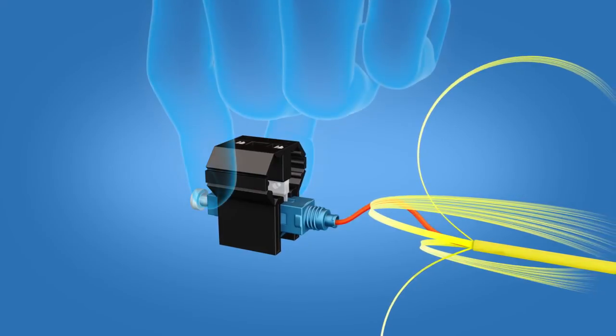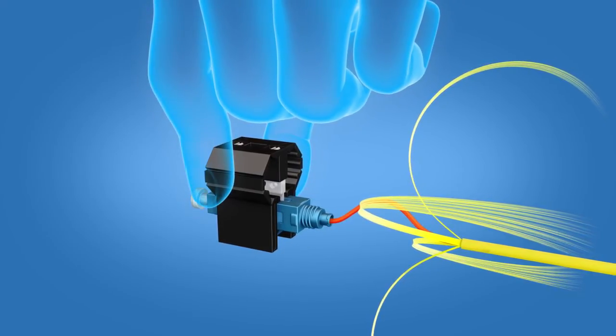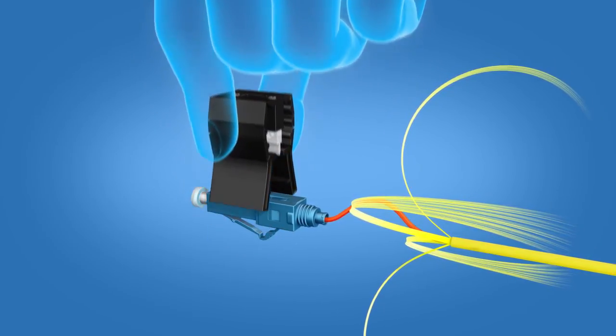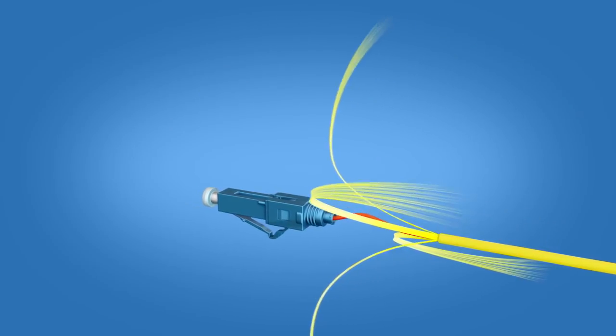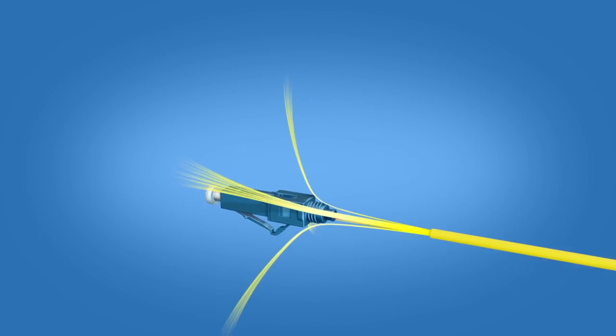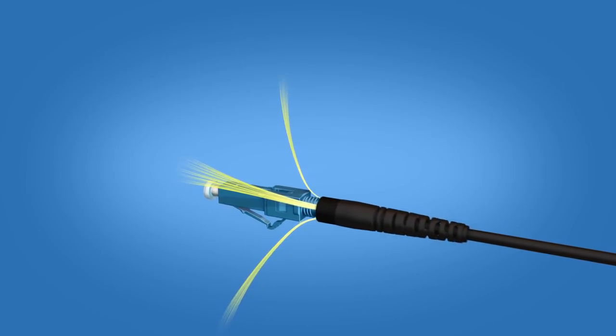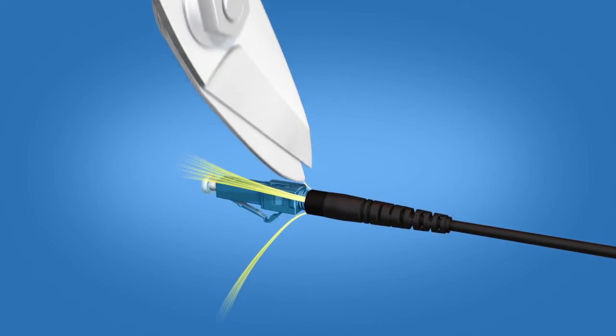Release the wedge clip by squeezing both sides and remove the wedge clip. Divide the Kevlar evenly on both sides and screw the boot on halfway. Trim excess Kevlar using the Kevlar scissors.